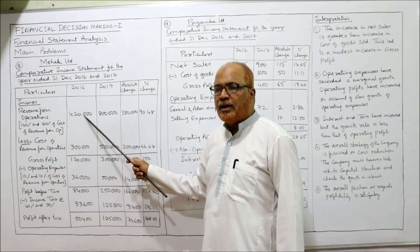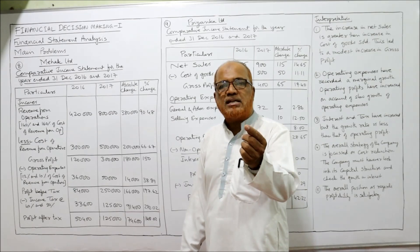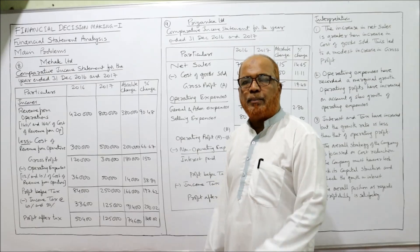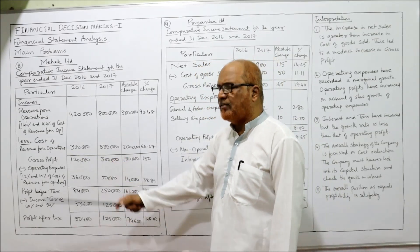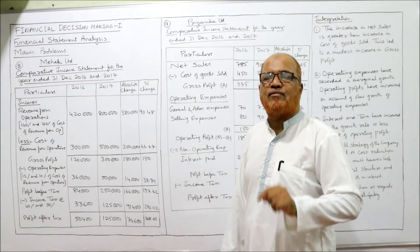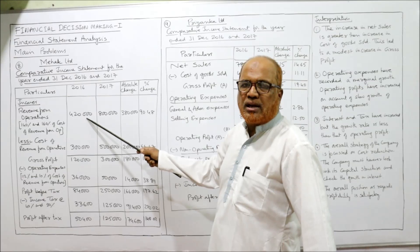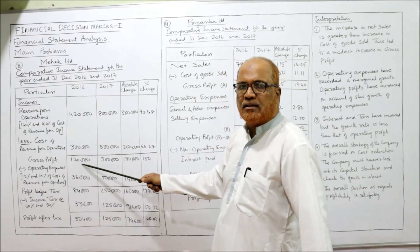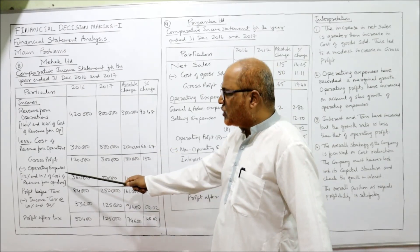From revenue from operations we deduct cost of revenue from operations. Purchases are included in cost of revenue from operations, so we simply ignore the purchases figure given. Revenue from operations minus cost of revenue from operations gives gross profit: 4,80,000 minus 3 lakh = 1,20,000 gross profit last year; 8 lakh minus 5 lakh = 3 lakh gross profit current year.